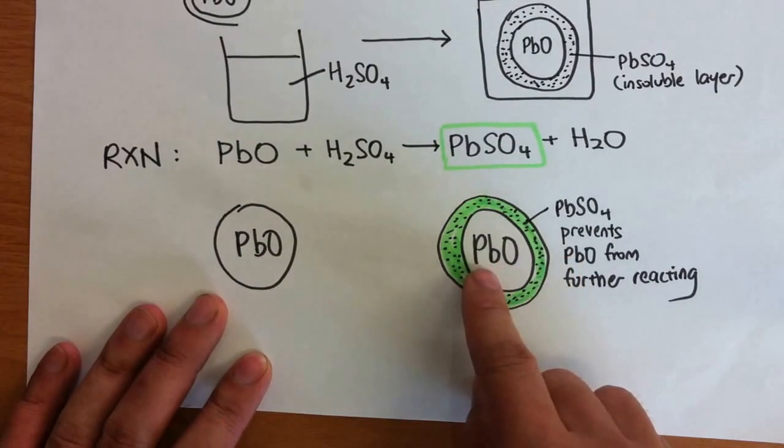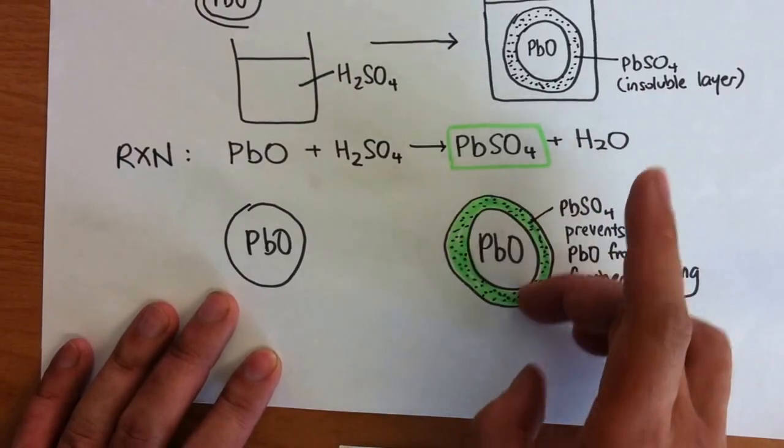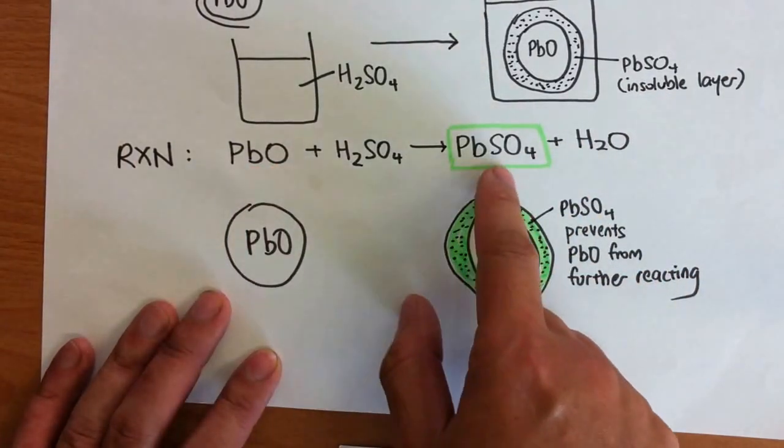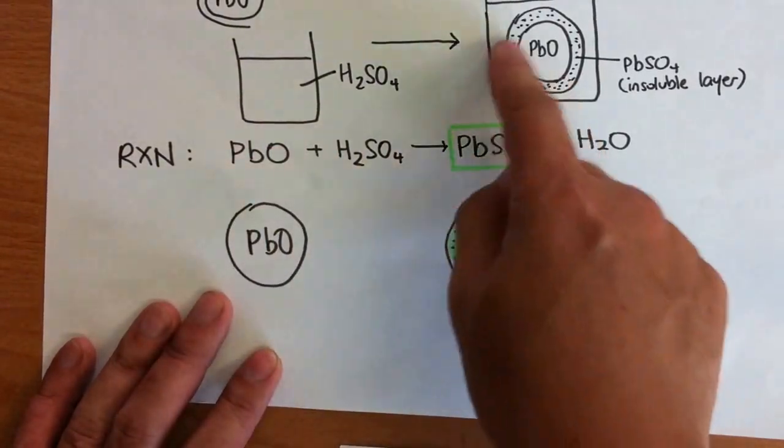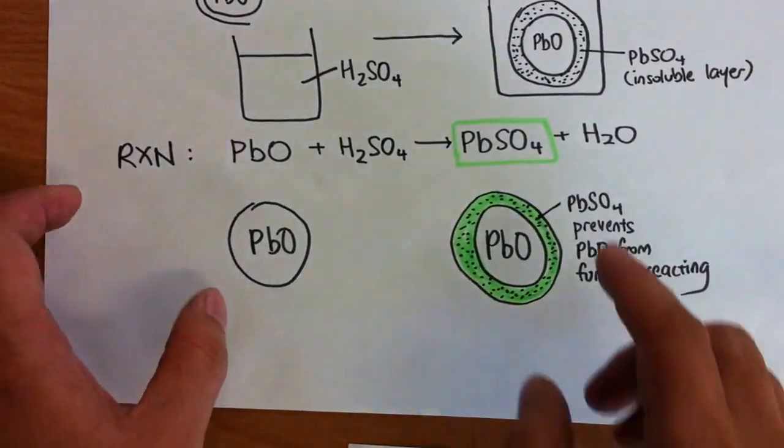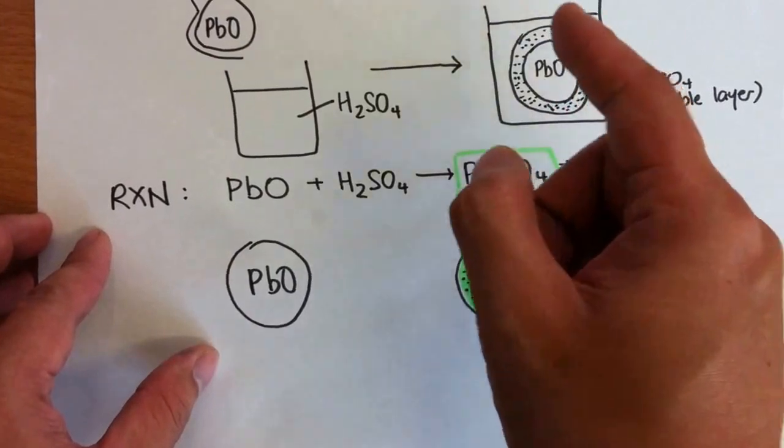This prevents PbO from further reacting with the acid. So what happens is the whole thing, you cannot ensure that the entire PbO will form PbSO4. You will have a contaminant of PbO inside the solution, and that is not good. And there is no way to get rid of the insoluble layer.